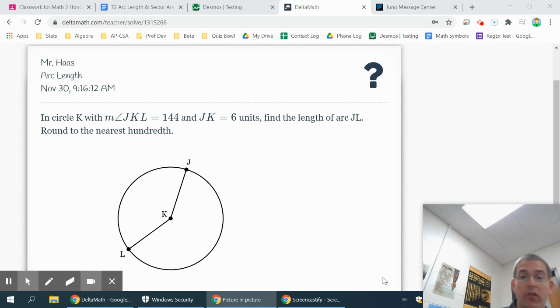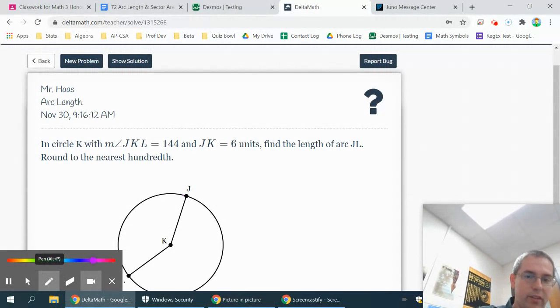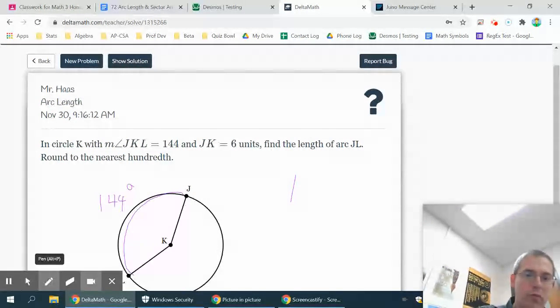Okay, here's what we have. We have a circle, and we have JK has six units, and we want to find the length of this arc segment JL. So trying to find the length going around here from J to L. And it tells you the measure of JKL is 144 degrees. Now 144 is not the length, it's the degree measure.